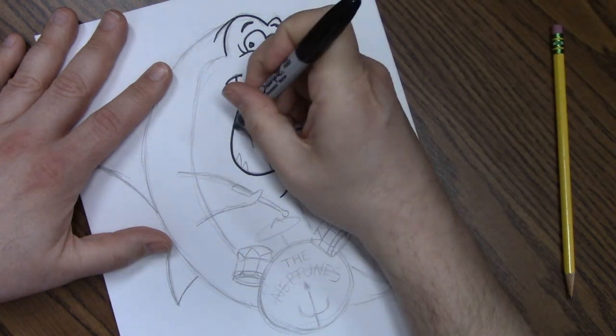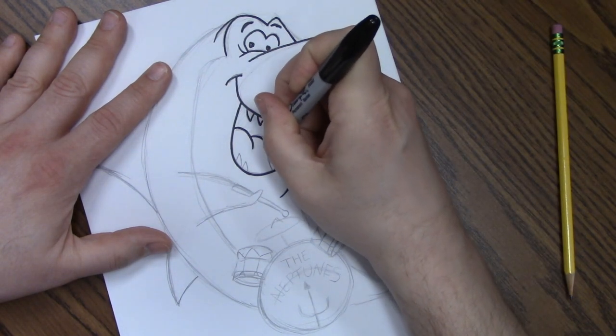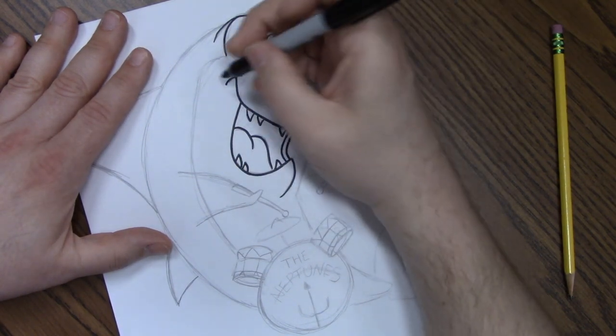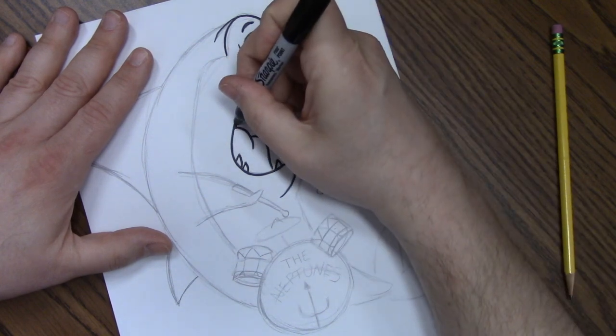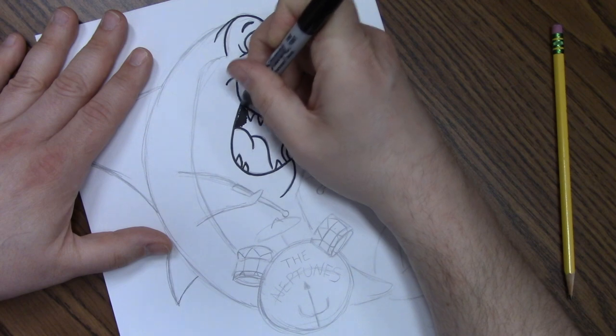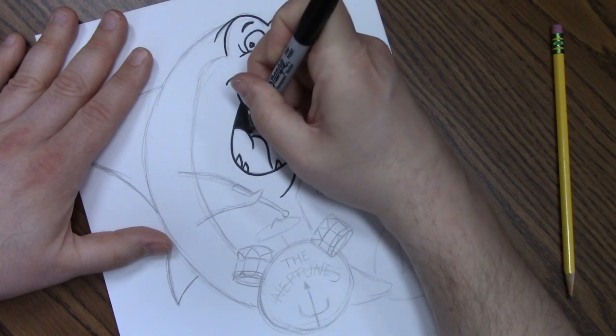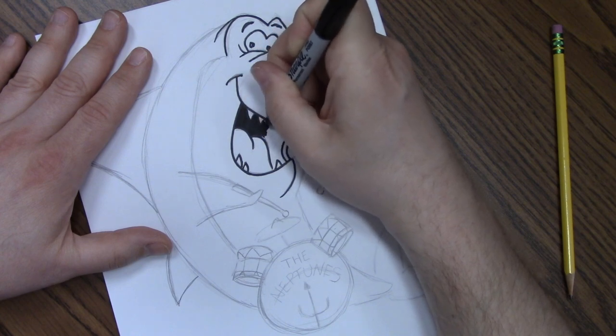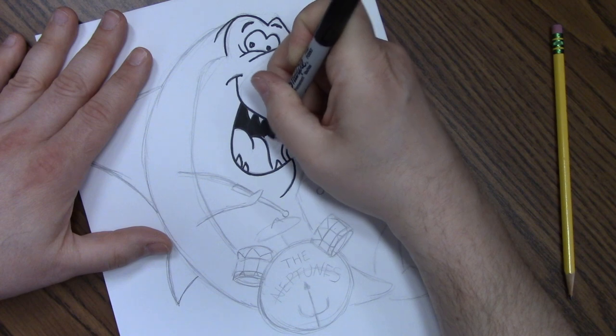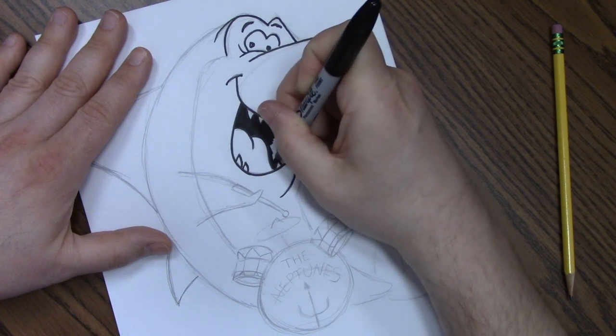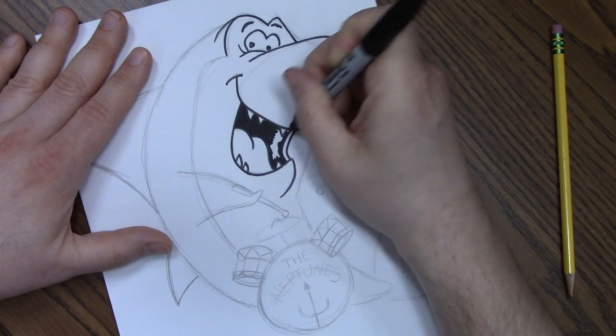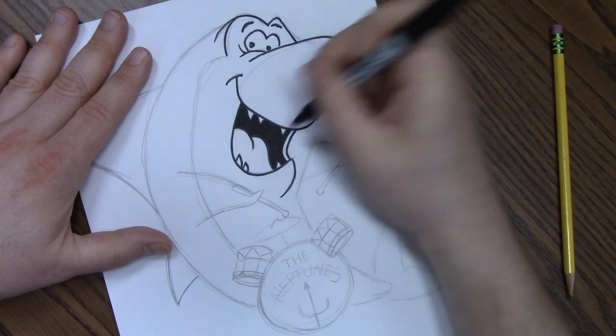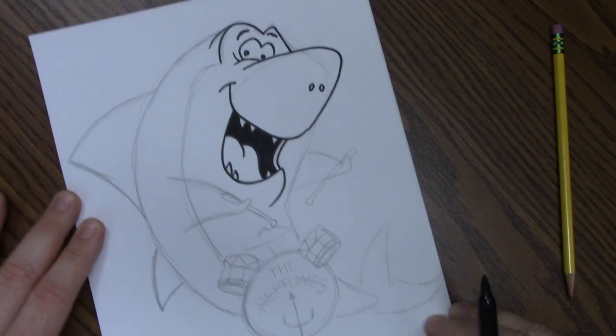I'm going to do individual teeth. The tongue. And now I'm going to ink all of the place where we shaded before. I'm going to ink that in all black. Okay. There we go.